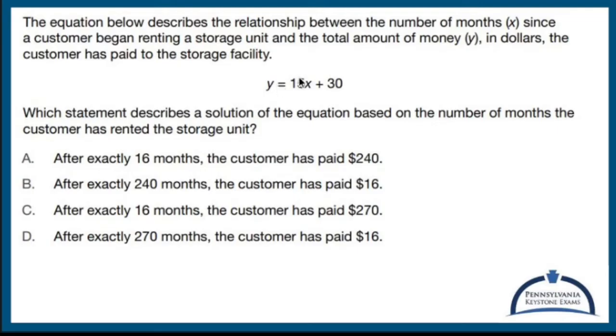So the total amount of money that's paid is 15X, which probably means $15 per month, plus 30, which means you probably pay $30 straight up.